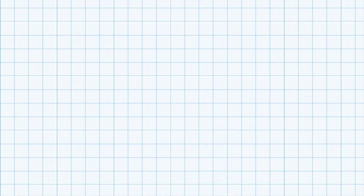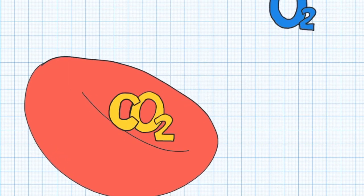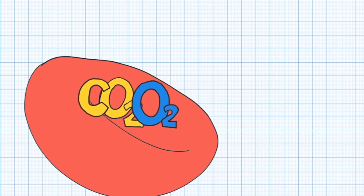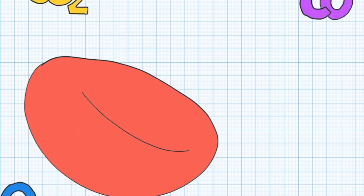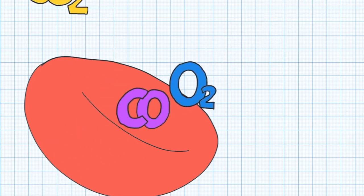Carbon monoxide specifically reduces the amount of oxygen delivered to our body because it binds very tightly to hemoglobin in our red blood cells and prevents them from being able to carry oxygen.